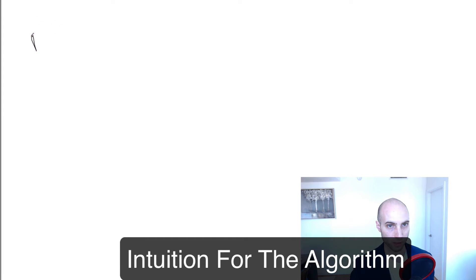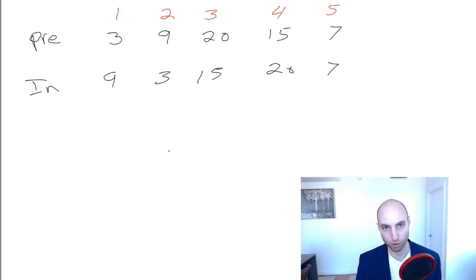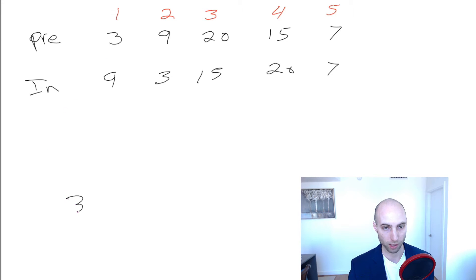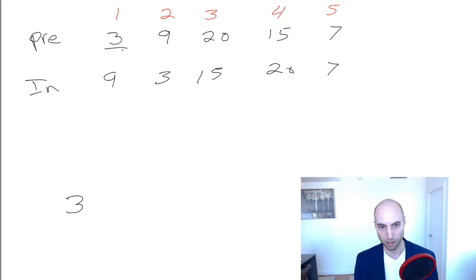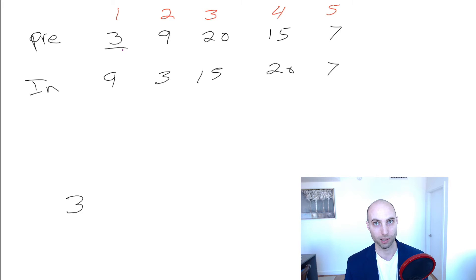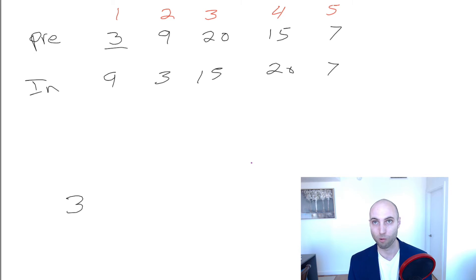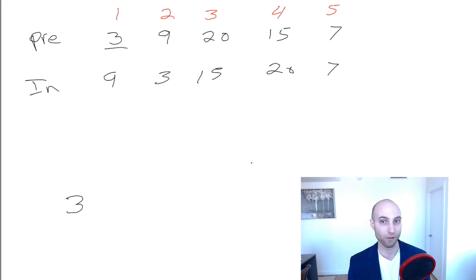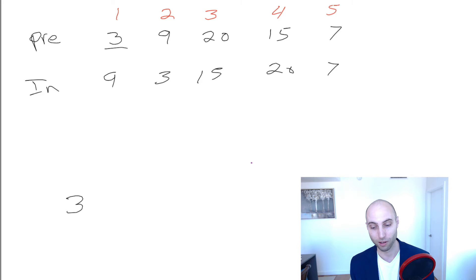In this example, they give us the preorder and inorder arrays. How can we build the tree? Well, we know the first element in the preorder array is going to be the root of the tree. So we can say 3 is at the root. The preorder only tells us the first element is the root. The inorder array, however, contains information about what is on the left and right of any given node, because by definition the node is in between its left and right subtrees.